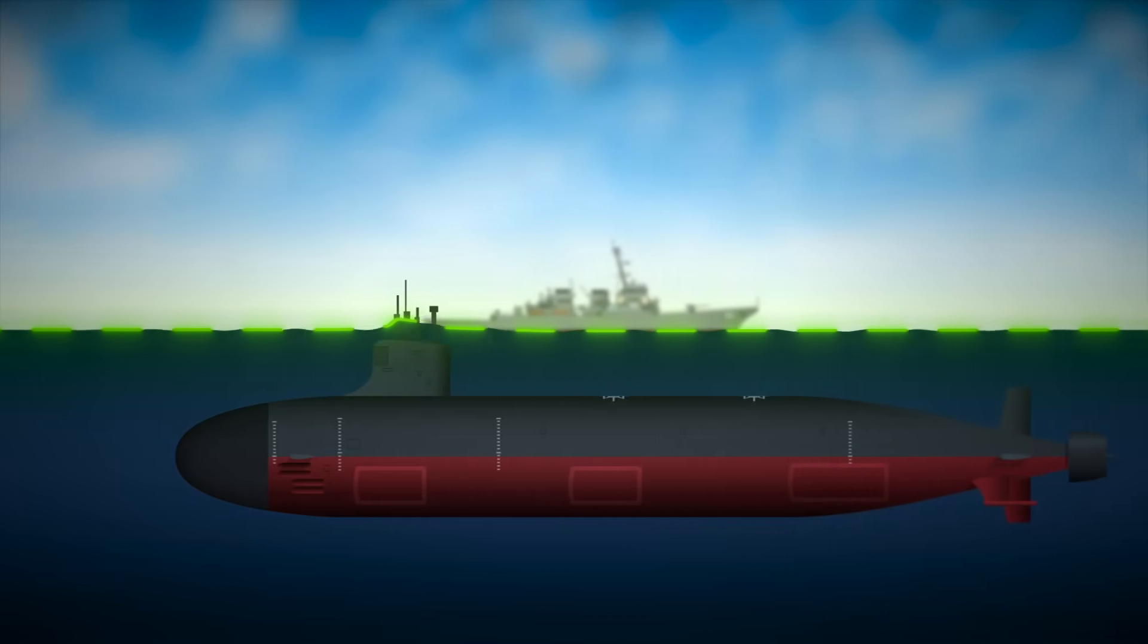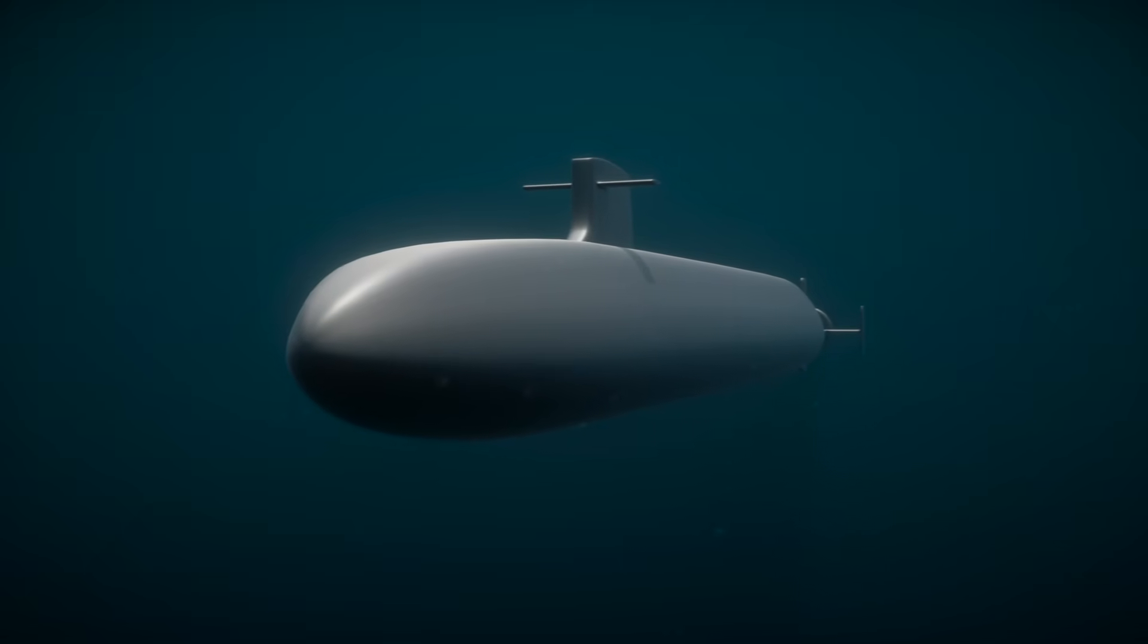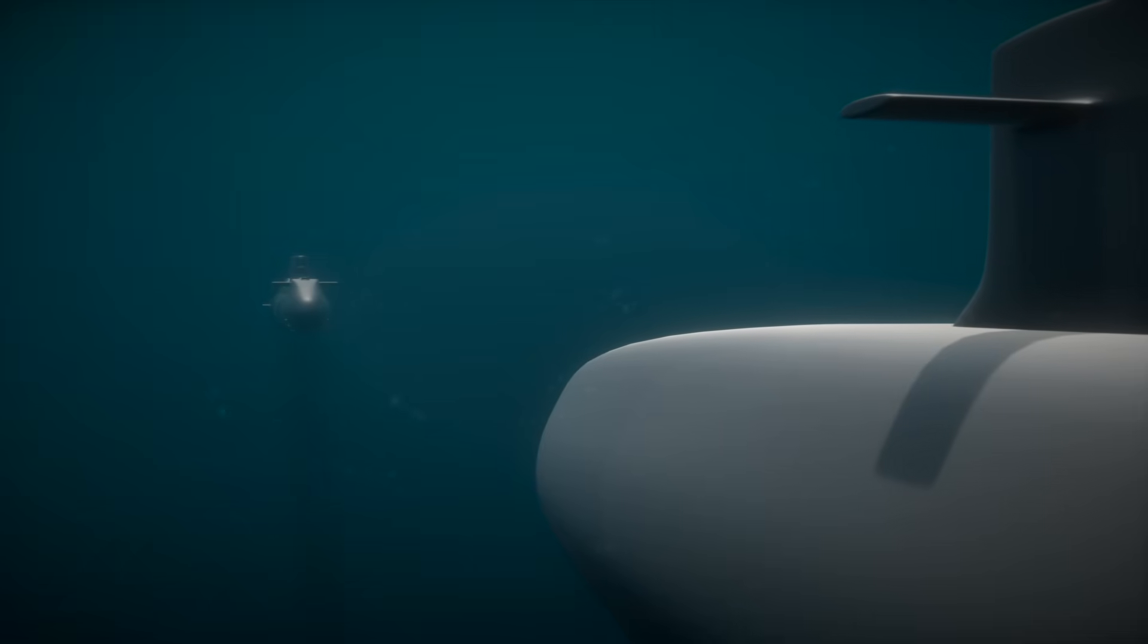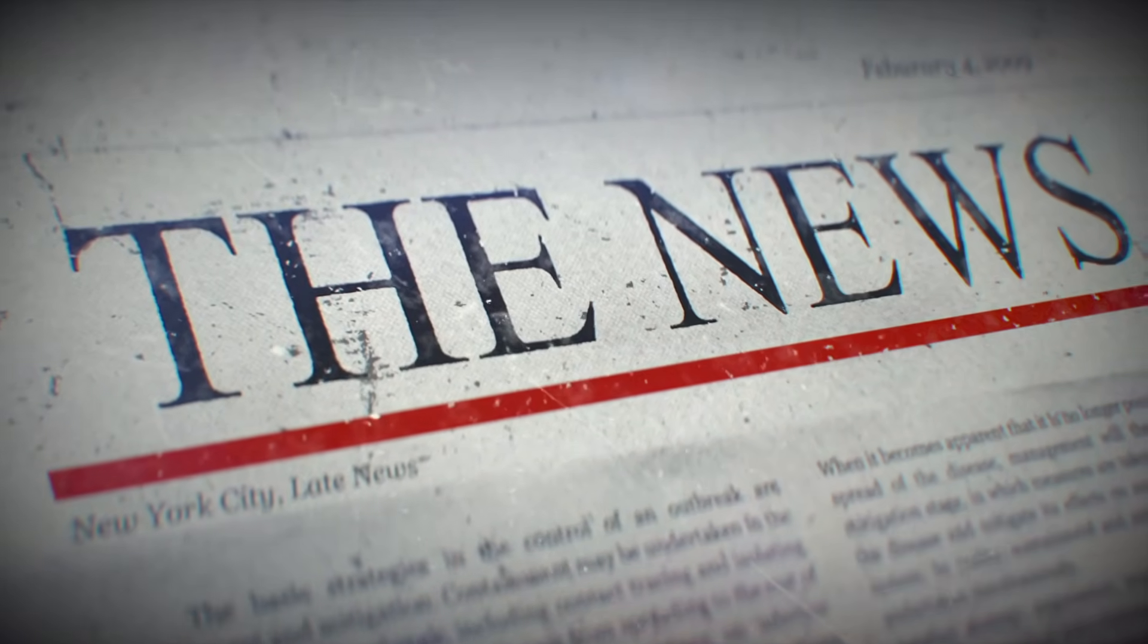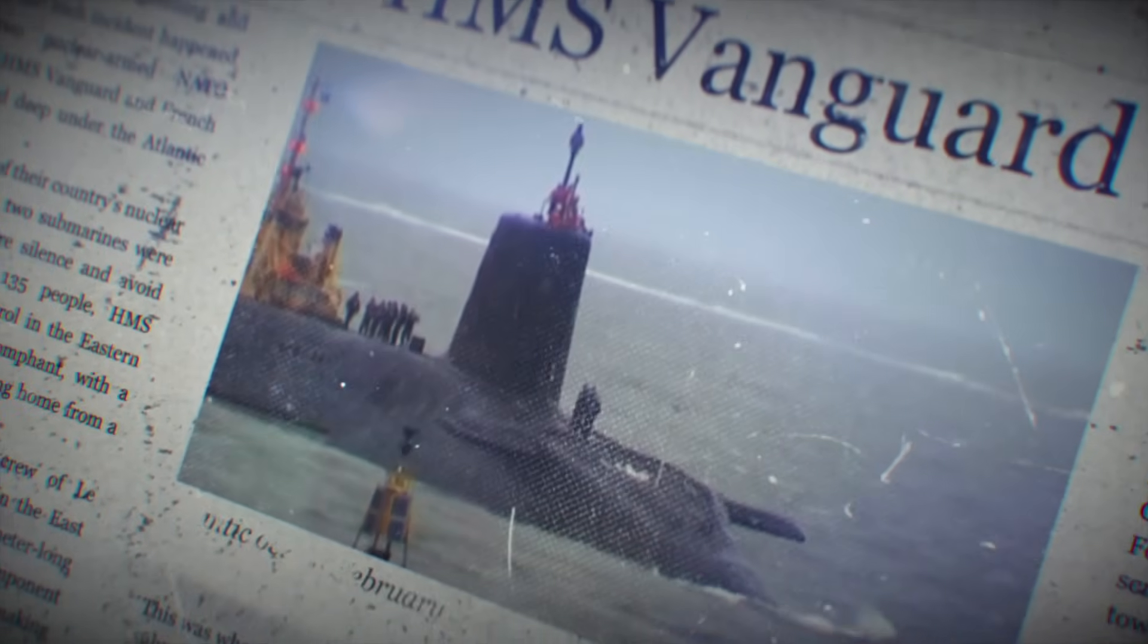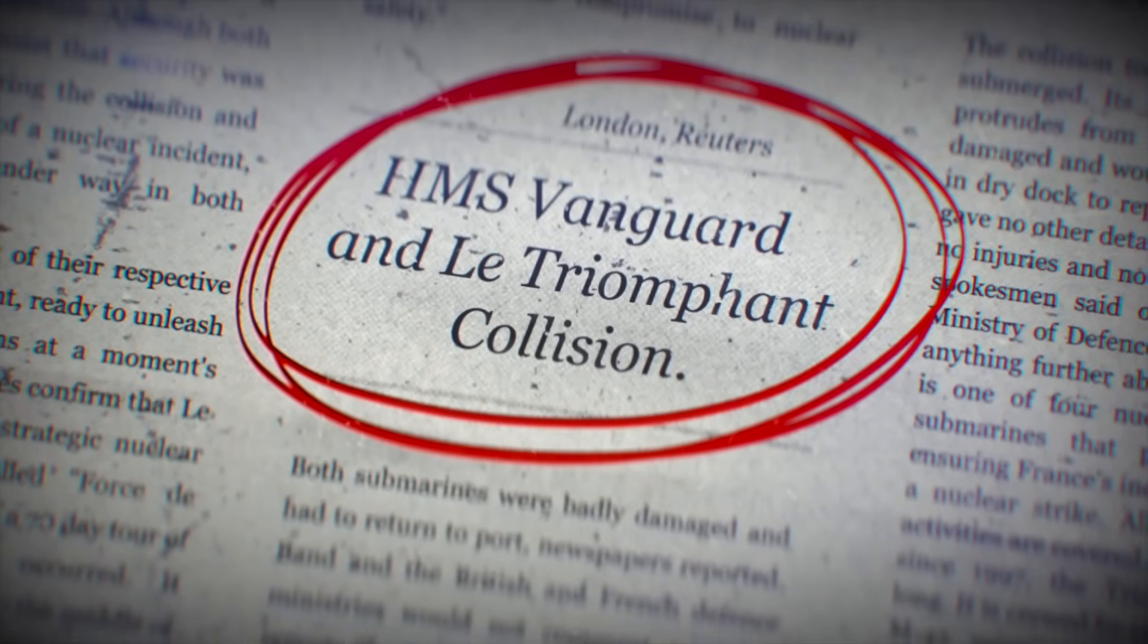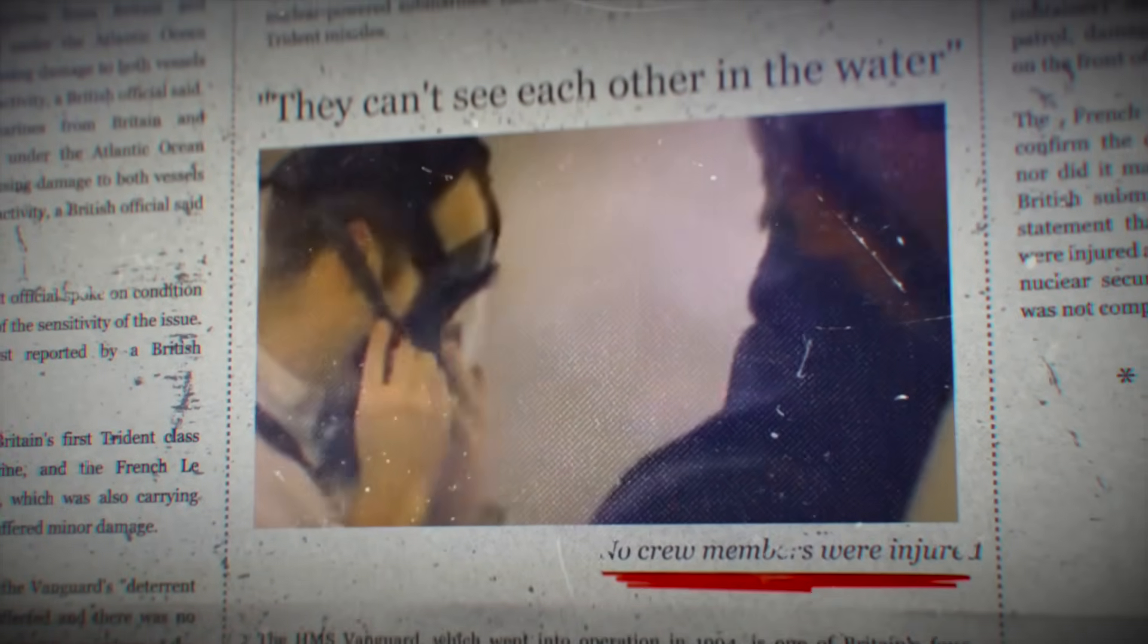But sometimes, stealth can go too far. One of the biggest risks in submarine warfare isn't just getting spotted. It's not spotting each other. There have been actual cases where two stealth submarines ran into each other underwater. Not because they were being aggressive, but because they were so focused on being invisible that they didn't see each other coming. Back in 2009, two nuclear submarines, one from the United Kingdom, the other from France, collided deep beneath the Atlantic. Both vessels were armed, both were running silently, and neither crew realized what was happening until after the impact. Thankfully, no one was injured, and there was no risk to the nuclear material.